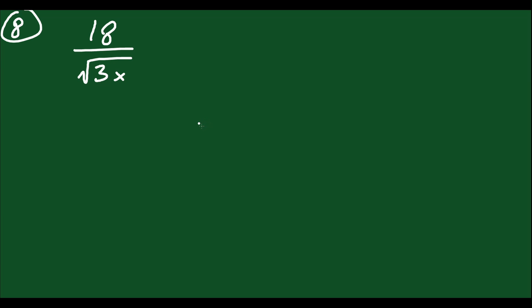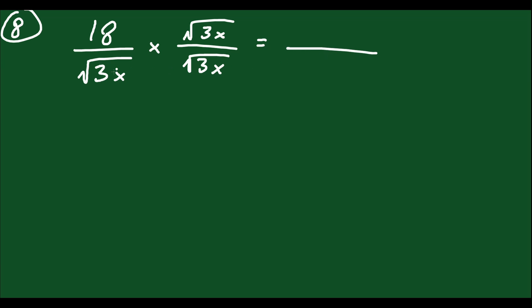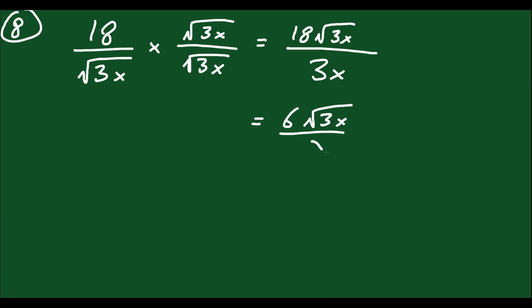Number 8: 18 over the square root of 3x. It's not proper to have a radical in the denominator, so we want to move it to the top. Multiply by √(3x)/√(3x). On the bottom, √(3x) times √(3x) equals 3x. On the top, you have 18√(3x). The 18 and 3 reduce, giving you 6√(3x) over x.